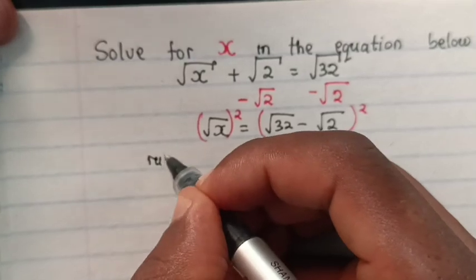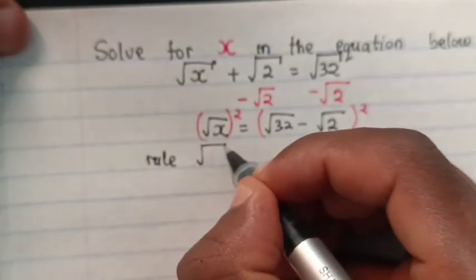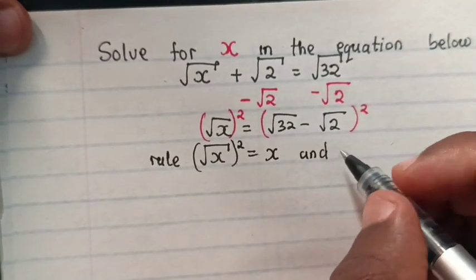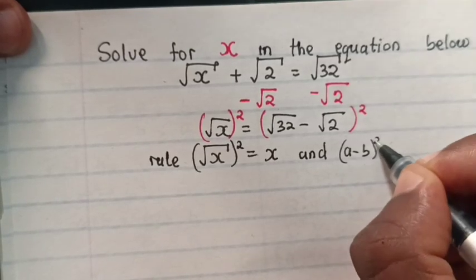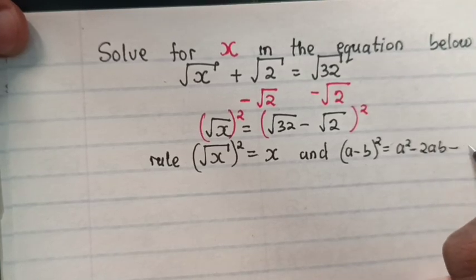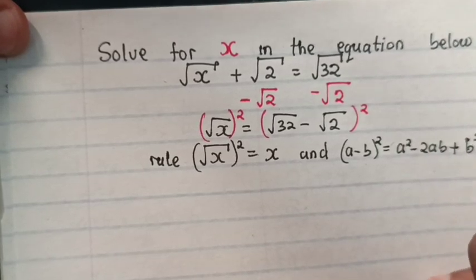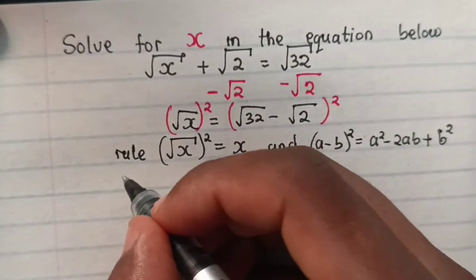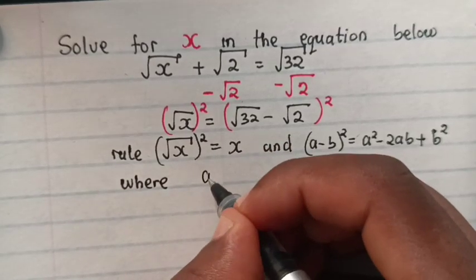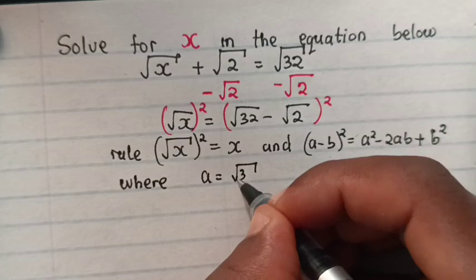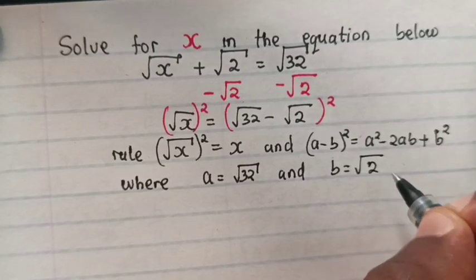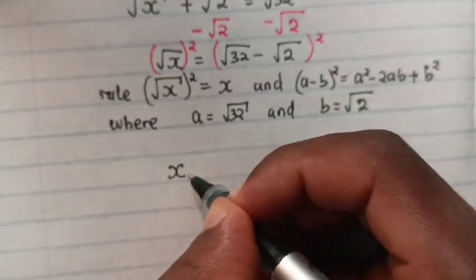So we apply the rule that square root of x squared is equal to x, and a minus b bracket squared is equal to a squared minus 2ab plus b squared. Where a is equal to square root of 32 and b is equal to square root of 2.